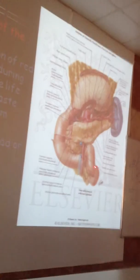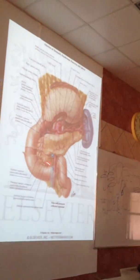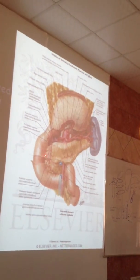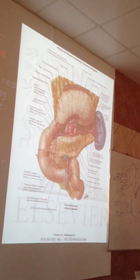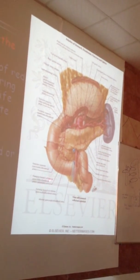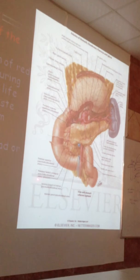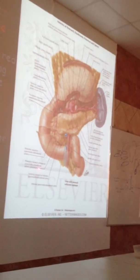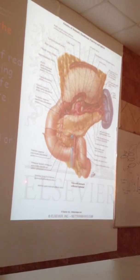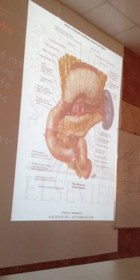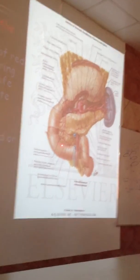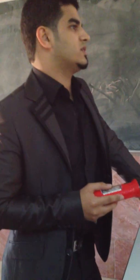The functions of the spleen include, first, the production of red blood cells in intrauterine life. The most important function is the elaboration of lymphocytes, giving it a major role in the immune system. It also collects waste products from the blood, and another important function is the removal of dead or aging red blood cells.